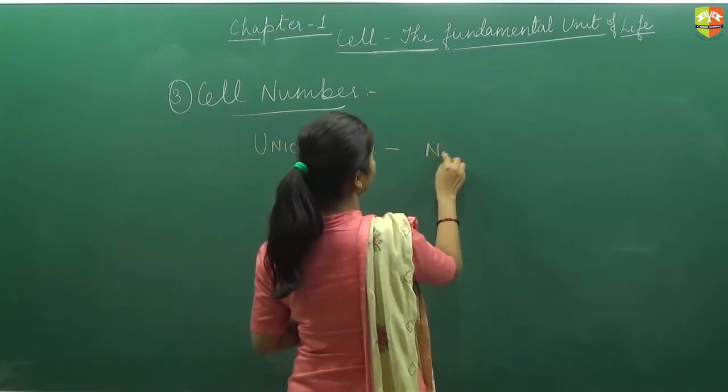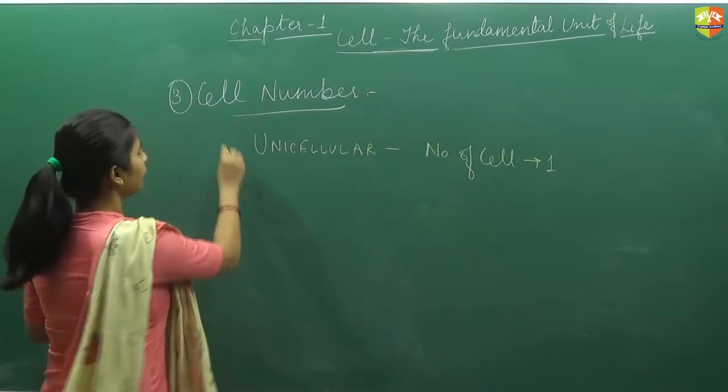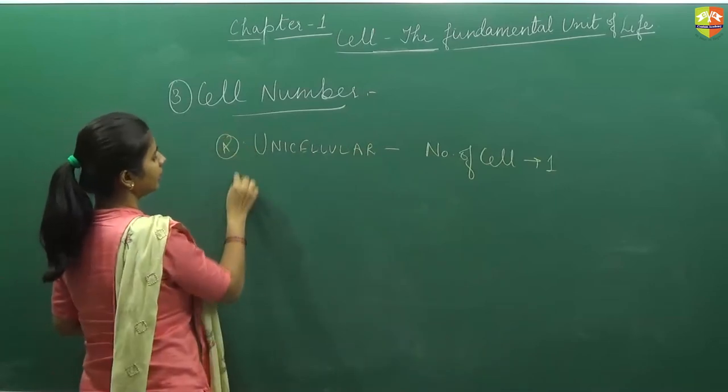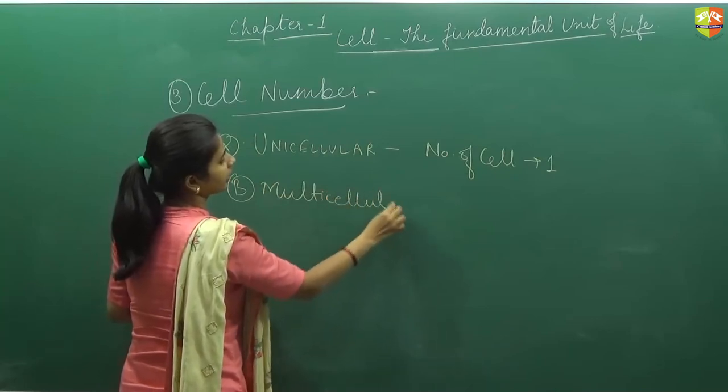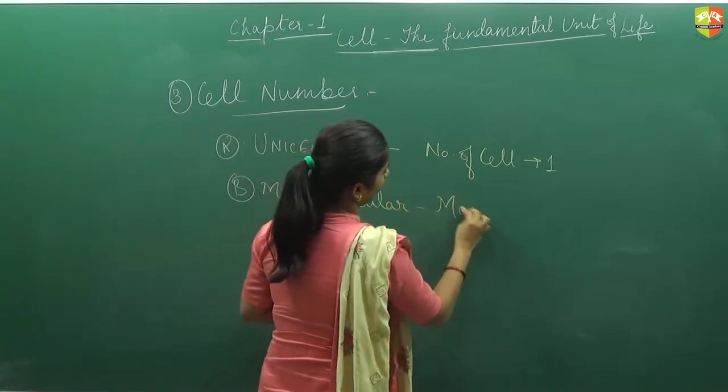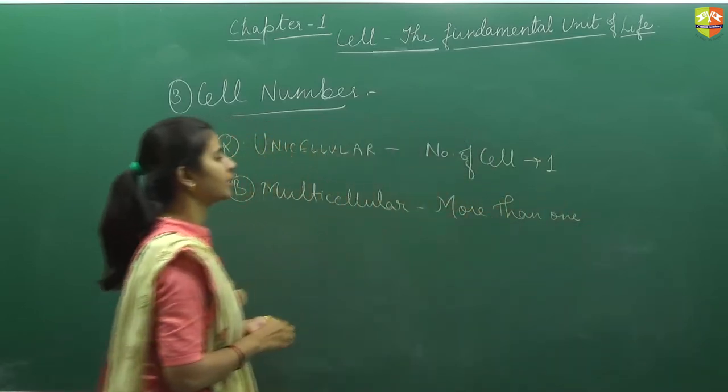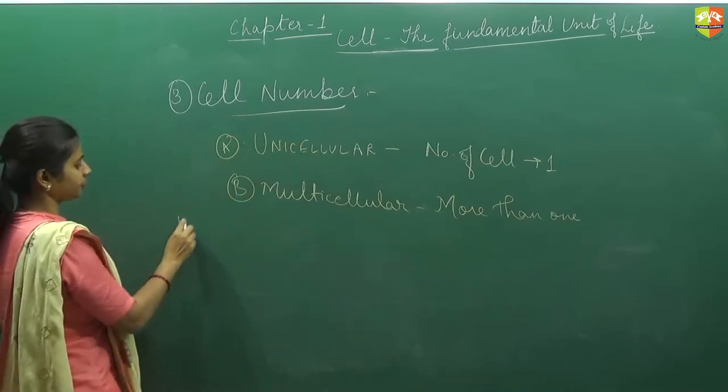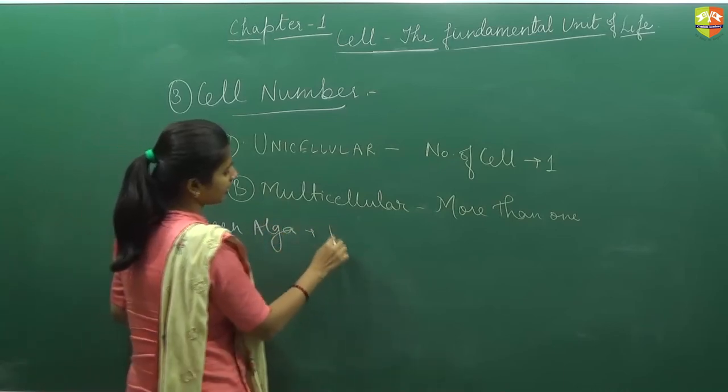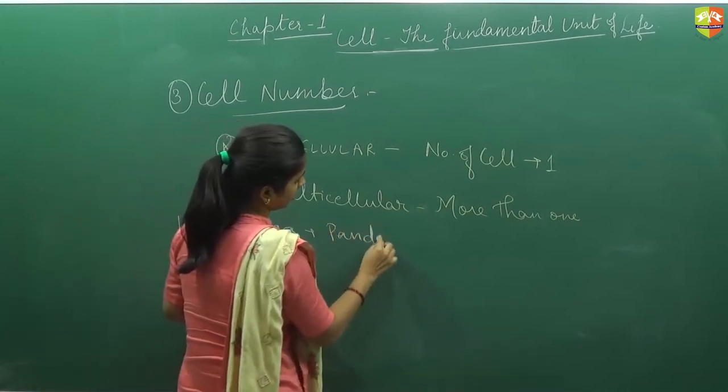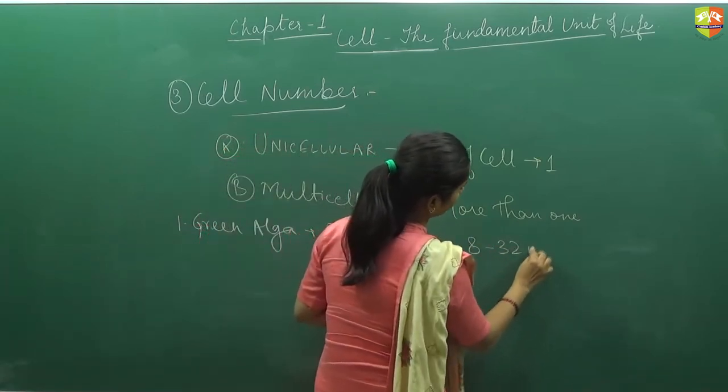But if it is the case of multicellular, multicellular means more than 1. And now more than 1 means it can be anything. So if we talk about multicellular, then let us discuss first that green alga whose name is Pandorina. It contains cell from 8 to 32 in number.